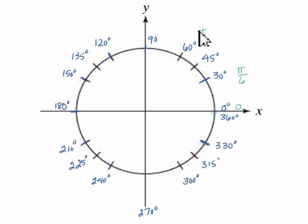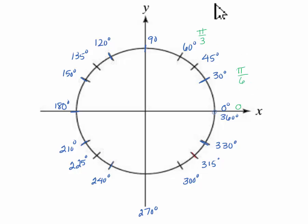If I count 1 more pi over 6, or another 30 degrees, that would bring me to 90 degrees. So I have 1 pi over 6, 2 pi over 6, 3 pi over 6 would be up here at 90 degrees. 3 pi over 6, if you reduce that, is equal to pi over 2. So 90 degrees is equal to pi over 2 radians.